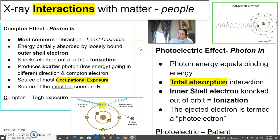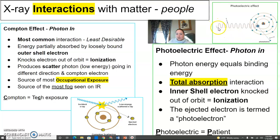Unlike x-ray production, these x-ray interactions with matter occur at the patient — because people matter. So your interactions with matter are located at your patient. Sometimes the differences are seen by looking at the images. These interactions start with a photon coming in to the patient.